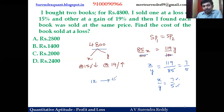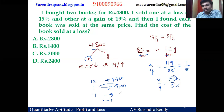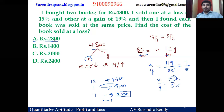Twelve parts cost 4800 rupees total, so one part is 400 rupees. The book sold at a loss is x, which takes seven parts. Seven parts equals 7 times 400, which is 2800 rupees. That is the cost of the book sold at a loss.